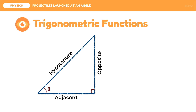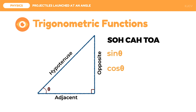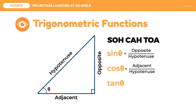The relationships of the three segments and the angle of release is described by SOHCAHTOA. The first letters of each word are the three trigonometric functions: S is for sine theta, C is for cosine theta, and T is for tangent theta. The next two letters of each word represent the ratio of the segments. So, SOH means sine theta equals opposite over hypotenuse, CAH means cosine theta equals adjacent over hypotenuse, and TOA means tangent theta equals opposite over adjacent.